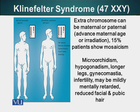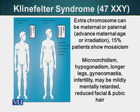Other features include microorchidism and hypogonadism, meaning the gonads are smaller and non-functional. Longer legs, gynecomastia meaning female-like breasts although they are males. They are infertile — they cannot reproduce because if the gonads are not functional, they will not be able to make sperm. They may be mildly retarded, and these people also have reduced facial and pubic hair. These are some of the features of males who have an extra X chromosome.